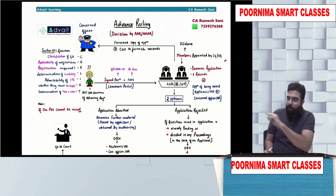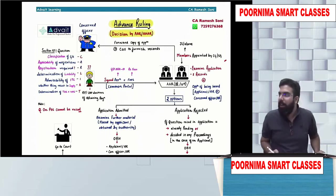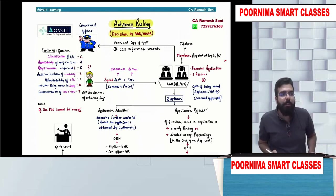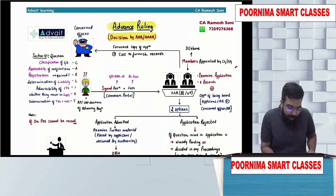Before we close the day, let's discuss advance ruling. What do we mean by advance ruling? It refers to a decision by the AAR or AAAR. AAR means Authority for Advance Ruling. AAAR means Appellate Authority for Advance Ruling.